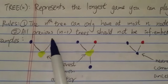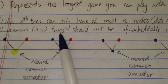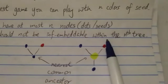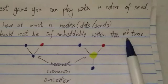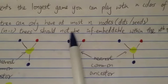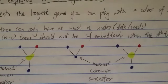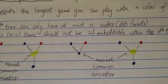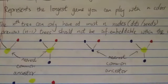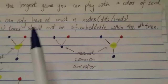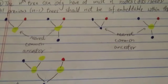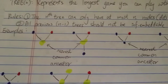The second rule is that all previous n-1 trees should not be embeddable within the nth tree. Another way to explain it: the previous trees cannot be contained in the next tree. That's the simple explanation.